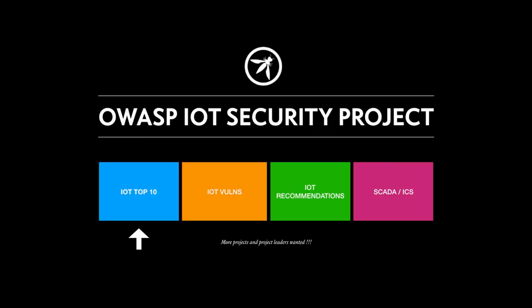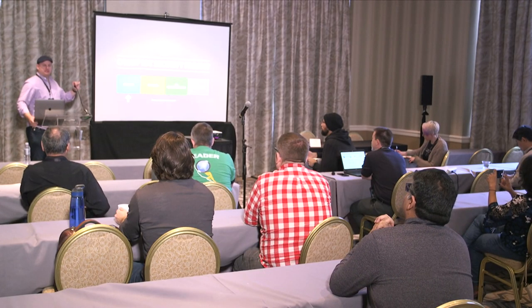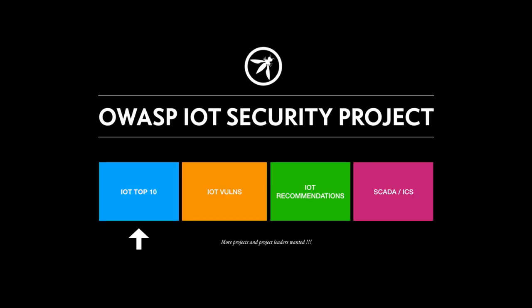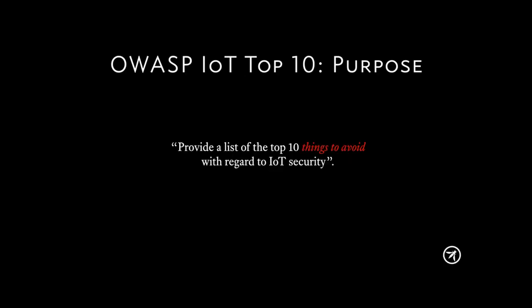The IoT Security Project is basically an umbrella of different projects. The IoT Top 10 is the one I'm specifically talking about today, but there are other projects like general IoT vulnerabilities, IoT recommendations, a separate project for IoT related to SCADA and ICS, and also a reference architectural project where you actually design what it should look like — because the problem with these types of projects is you show people what you shouldn't do, and they say, fine, what should I do? So that would be a really nice project to have.